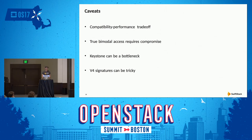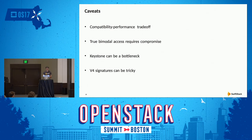Next, if you're using Keystone as your auth service, only Keystone and the end client know the signing keys — the Swift proxies never see it. This is good for security, but it means that every client request has to go through Keystone to be validated. This is better than it used to be, where we used to have two Keystone requests for every client request, but there isn't a good way around that currently.